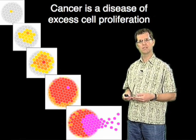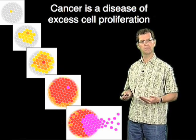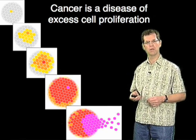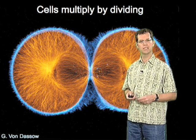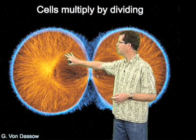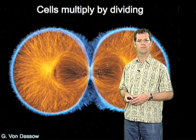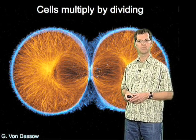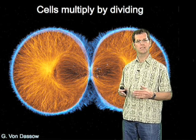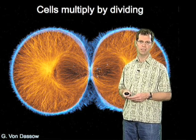Another theory was that all cells are derived by the division of pre-existing cells. Through 20 or 30 years of intense microscopy in a wide range of cells, tissues, and organisms, it became clear that the second theory was correct — that indeed all cells are derived by the division of pre-existing cells. This has profound implications because it means that all cells in existence today are likely derived from a single ancestral cell that divided perhaps three and a half billion years ago.